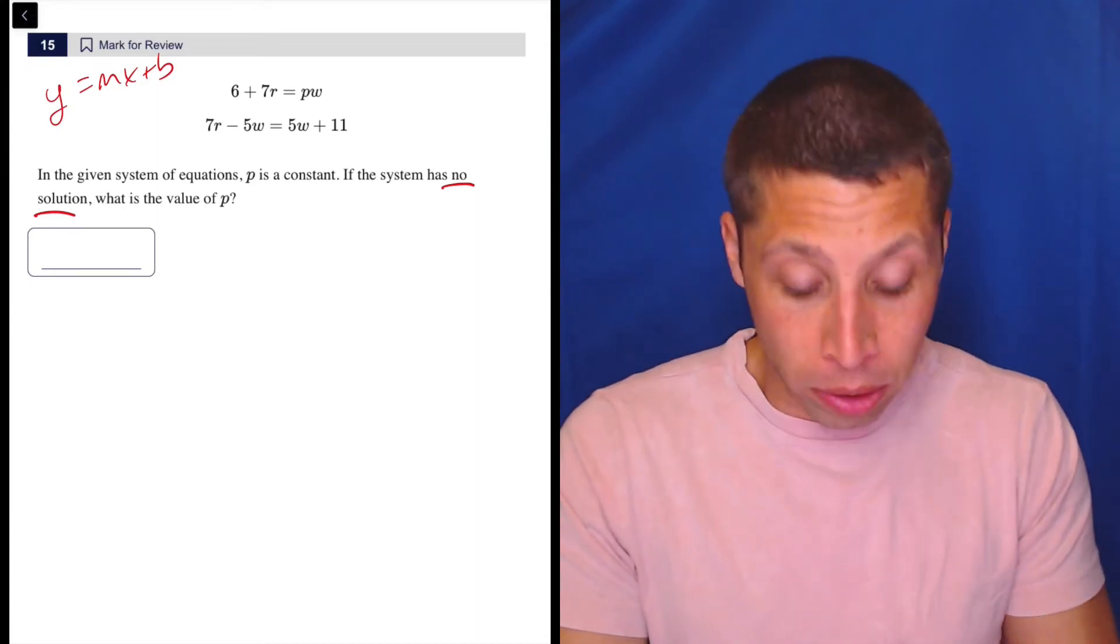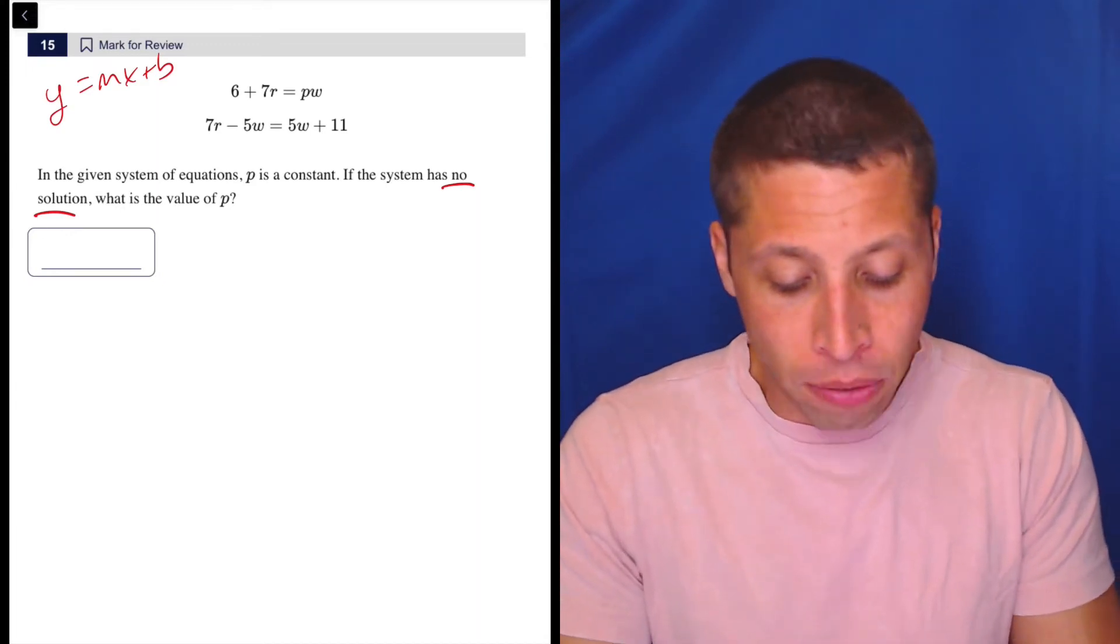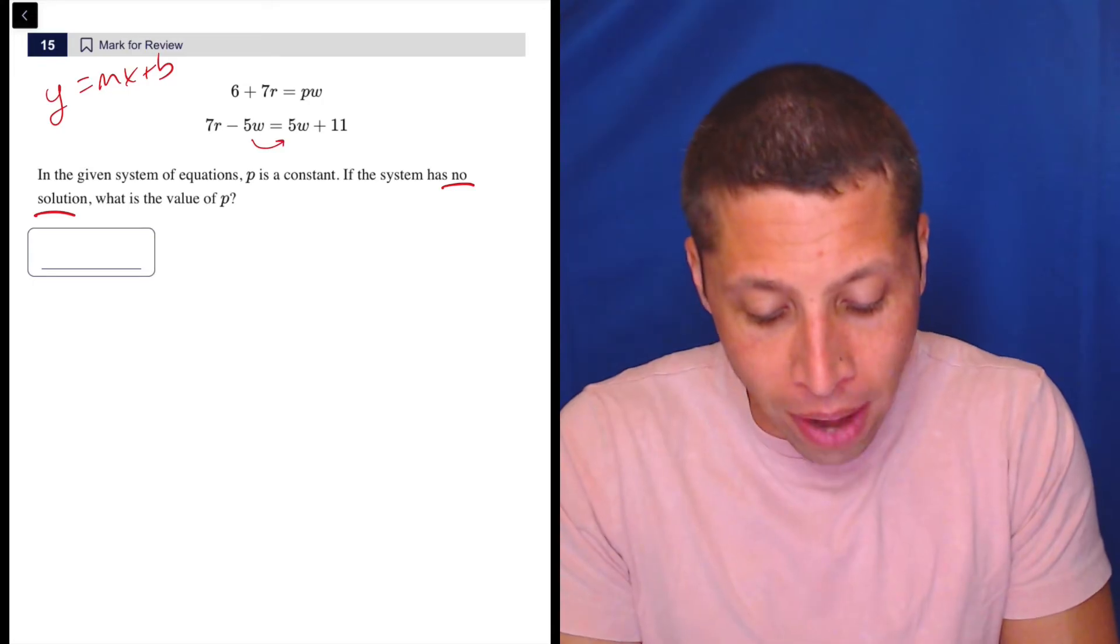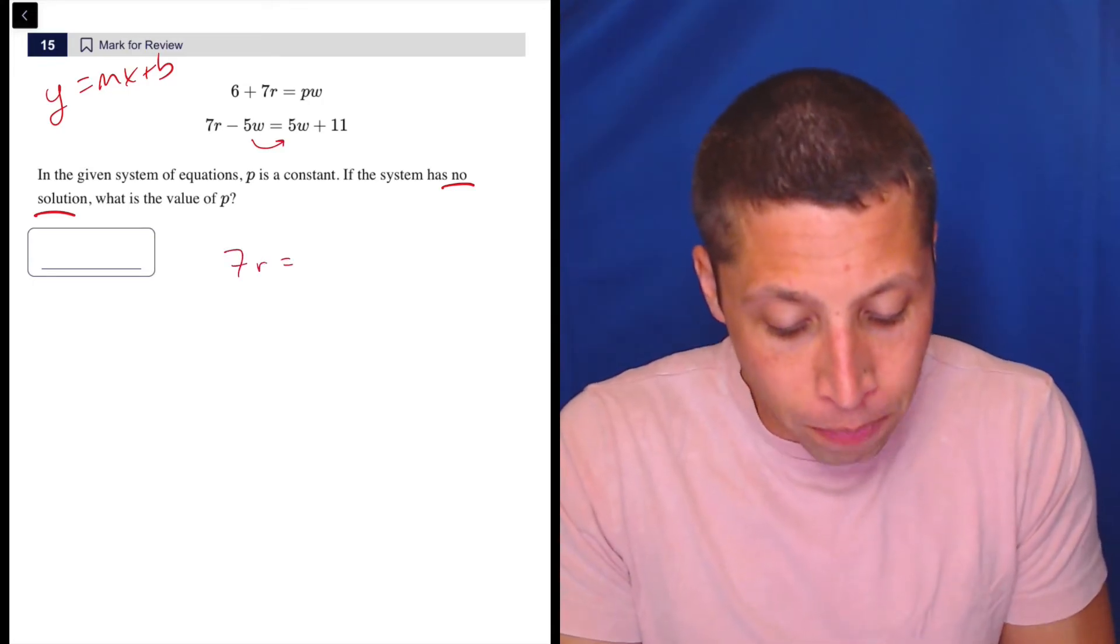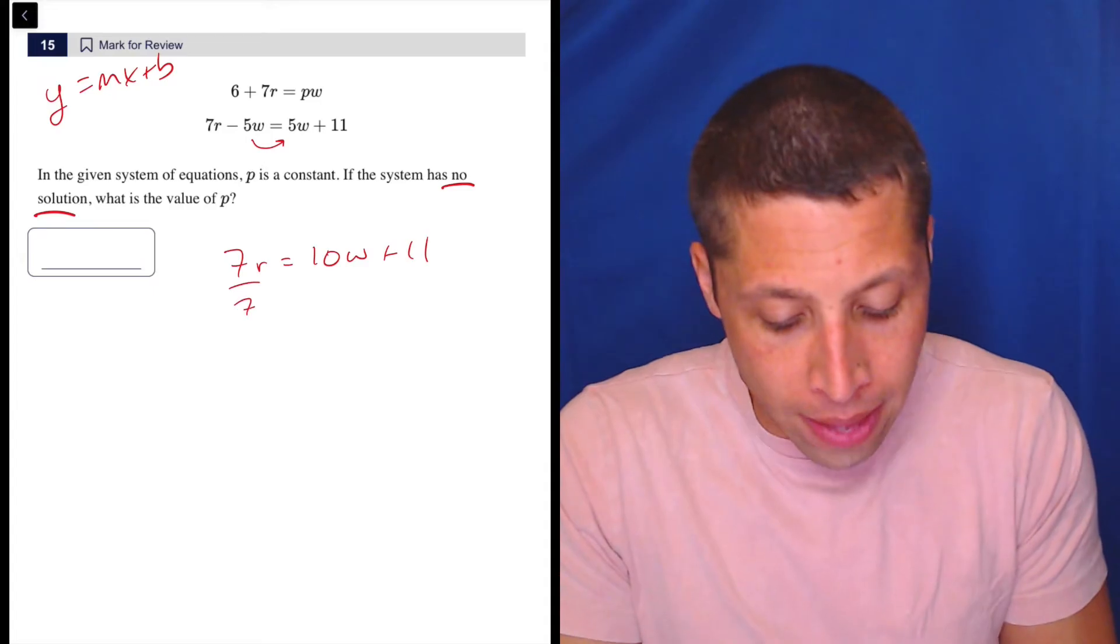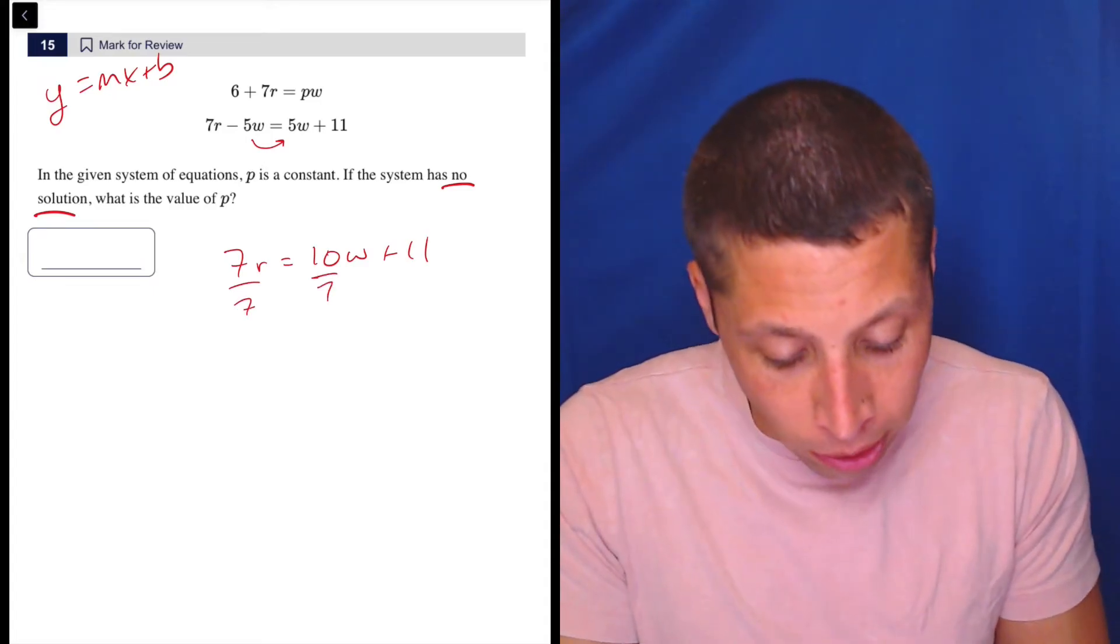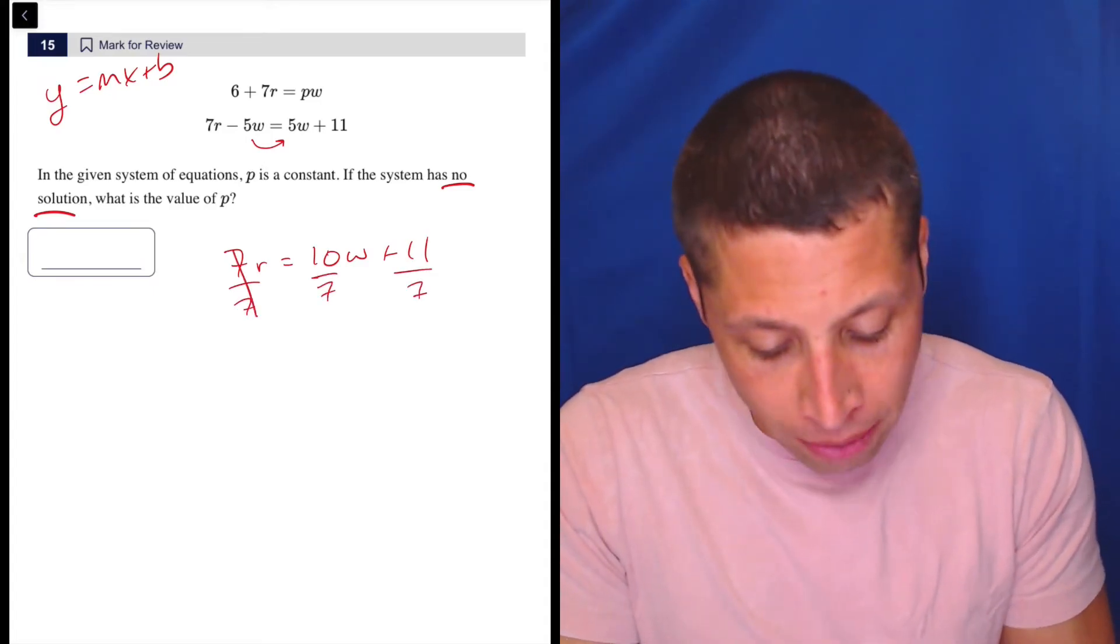I'm going to work with the second equation because it has fewer variables. I'm going to add the five over, so that's 7R equals 10W plus 11. Then let's make the R, the Y, let's get it alone. I'm going to divide everything by seven.